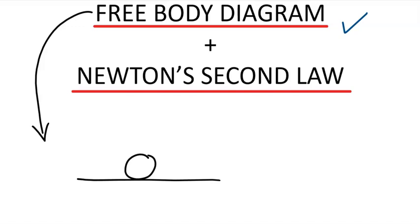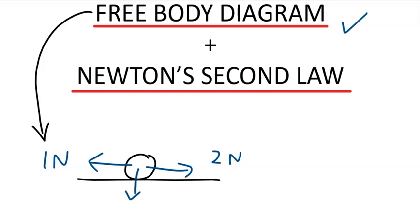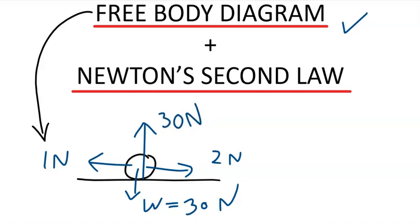Say that an object is moving on a floor, and it's acted upon by a rightward force of 2 Newtons and a leftward force of 1 Newton. We have to show these forces because they act directly on the body. In addition, you should also label the weight — 30 Newtons — and the normal force that the floor presses against the body, which in this case equals the weight, so normal force is also 30 Newtons. This is an example of a free-body diagram.